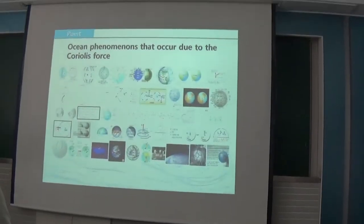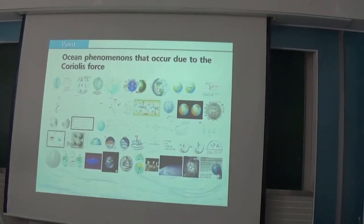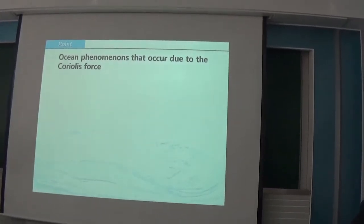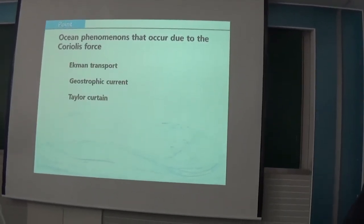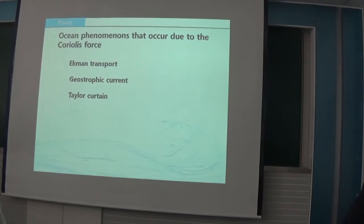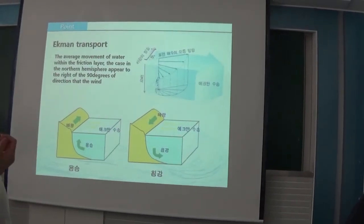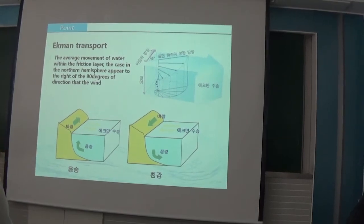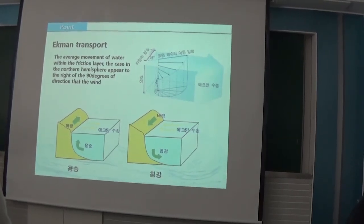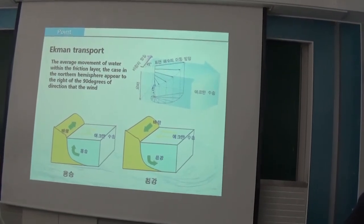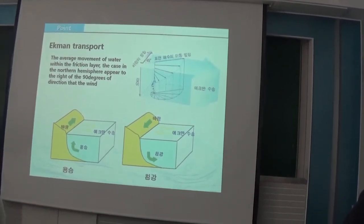There are many phenomena caused by Coriolis force, as you can see here. From these phenomena, let's learn about phenomena that happen mainly in the ocean. The first is Ekman transport. Sea water's average movement in the friction layer appears to the right angular side of the wind on Earth's northern hemisphere. We call it Ekman transport.